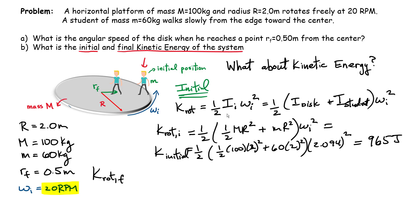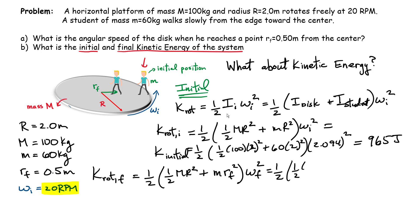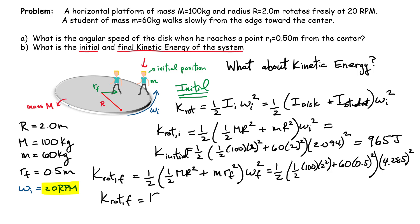For the final kinetic energy, the formula is similar but with the updated moment of inertia. The disk's moment of inertia is unchanged, but the student's is now m r_f squared = 60(0.5)². Substituting: one-half times [one-half(100)(2²) + 60(0.5²)] times (4.285)² gives a final rotational kinetic energy of approximately 1974 joules.